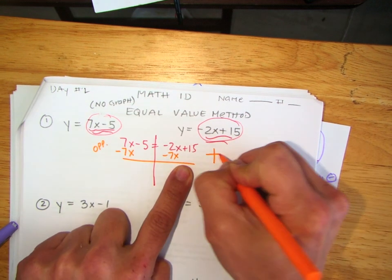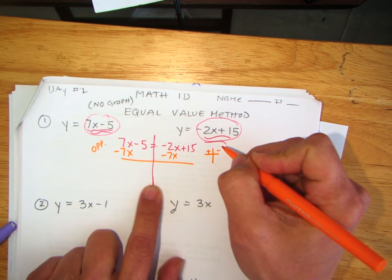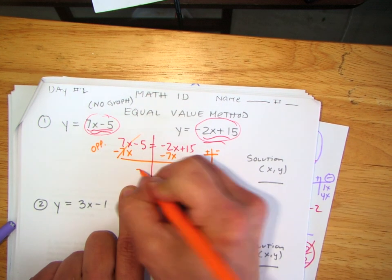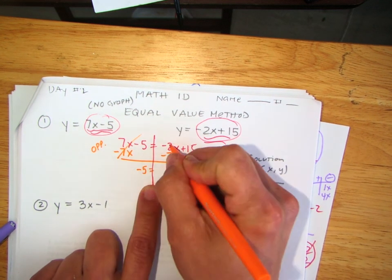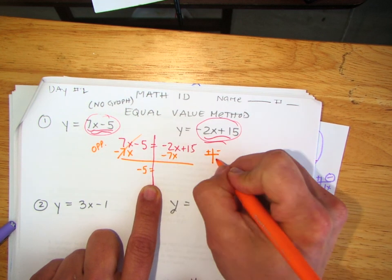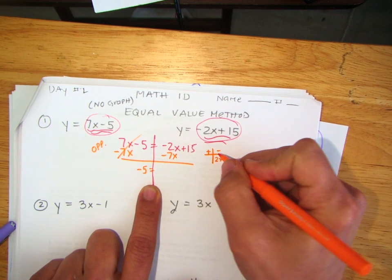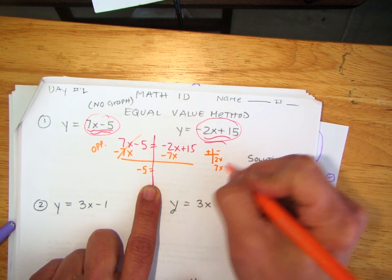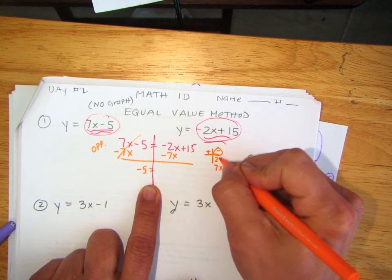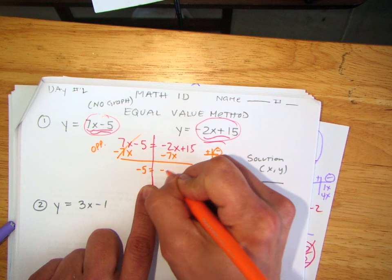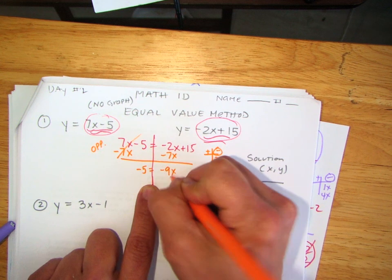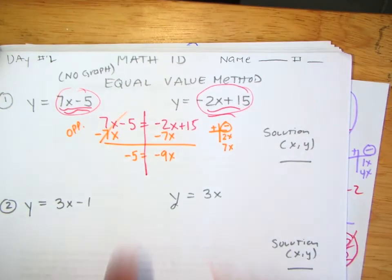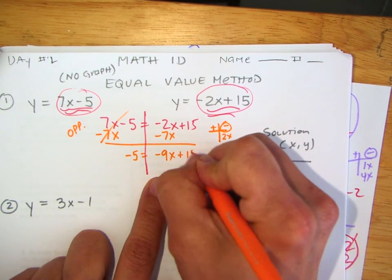So I did the opposite over here, and on this side I got to do the T-chart. This becomes zero. Drop it down: negative 5 equals negative 2x minus 7x, which gives you negative 9x. And then we're going to drop the 15.